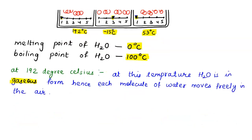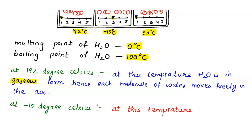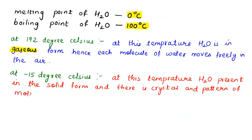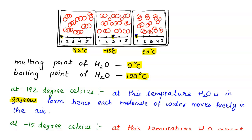Now let's see what happens at minus 15 degrees Celsius. At this temperature, water H2O is present in the solid form. A crystal pattern of molecules is formed. So at point B, which is at minus 15 degrees Celsius, the water molecules are in the solid form and crystals are formed.